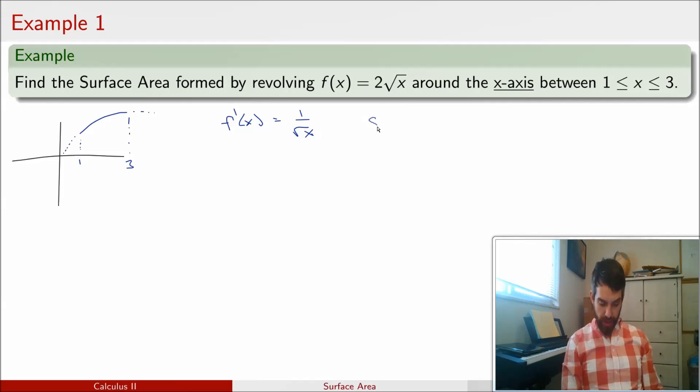And then, my formula is going to be that the surface area is equal to the integral between 1 and 3, that's my limits, of 2π times f of x, so 2π times 2 root x, all multiplied by the square root of 1 plus the derivative squared. The derivative is 1 over square root of x, it's just going to be 1 over x dx.